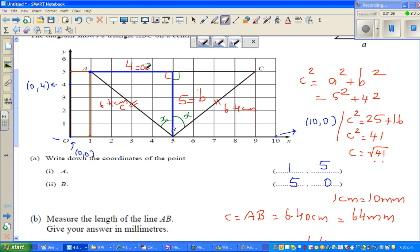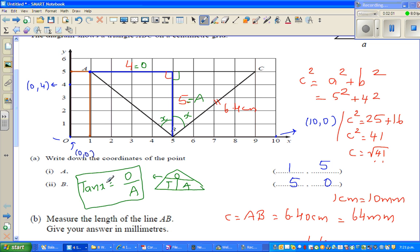Let me delete this A. Now using SOHCAHTOA for this angle, this is your opposite and this side is your adjacent side. When you've got opposite over adjacent, you're going to use the trig ratio of tan. TOA is a mnemonic for tan. This formula can be written as tan X equals opposite over adjacent.